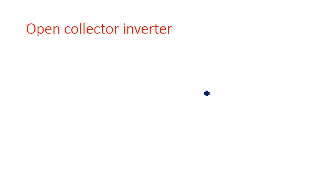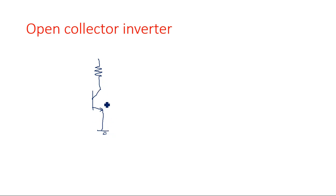In this video I am going to explain about open collector gates. When a transistor is used at the output terminal, it will have a resistor from VCC to the collector of the transistor. The emitter may be connected to ground through a resistor, and the output is generally taken from the collector terminal. This resistance's other terminal is connected to VCC, which may be 5 volts or 12 volts.